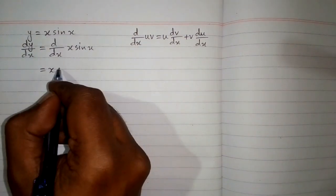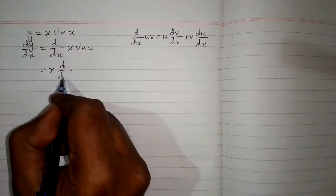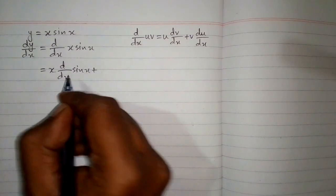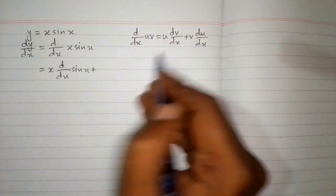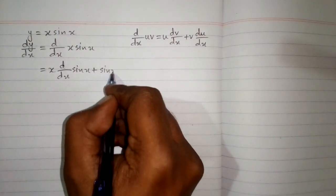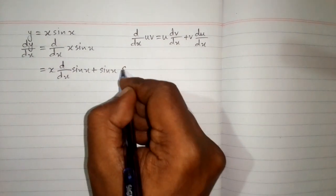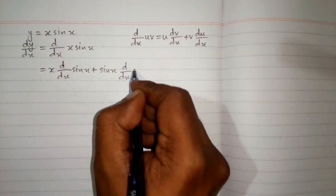Then plus v, v is sin x, and u is x. So we will write d/dx of x.